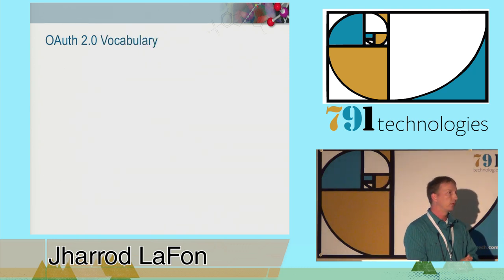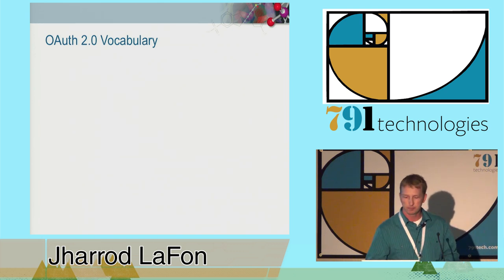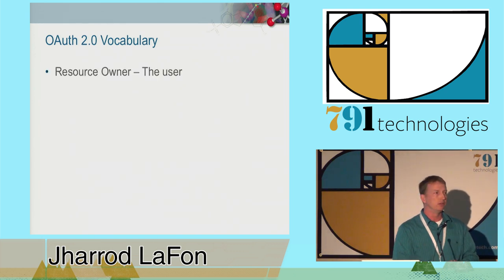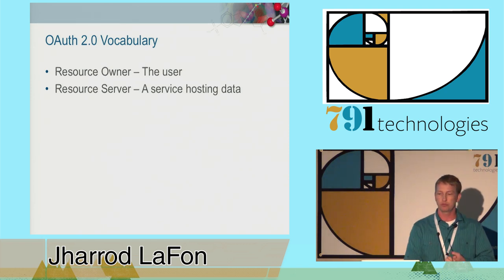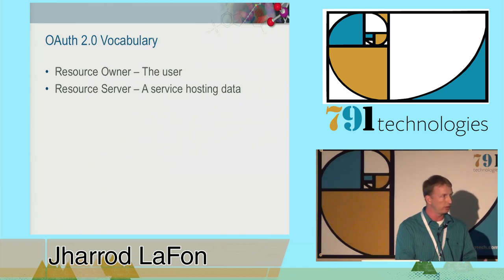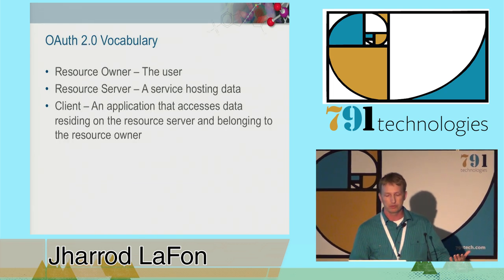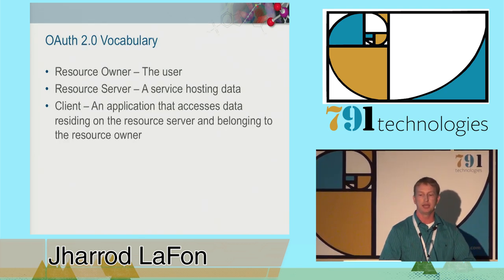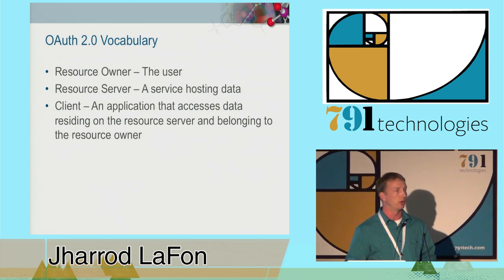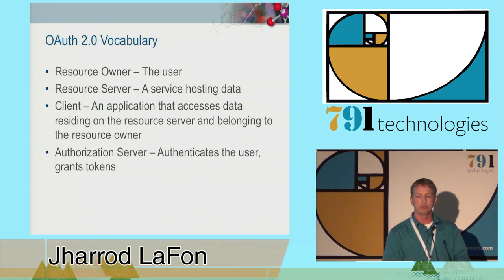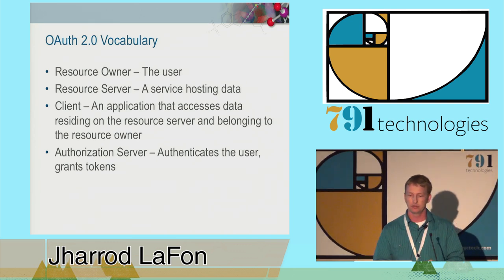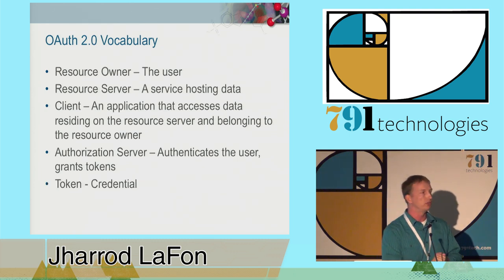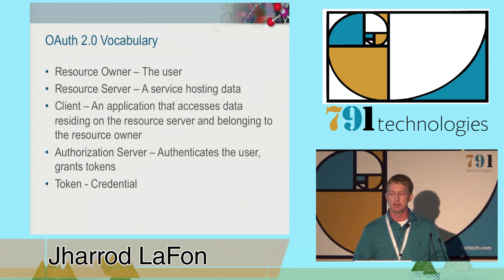OAuth 2 has its own vocabulary. First, we have the resource owner—this is what we would call a user, and this user owns data that is stored on the resource server. A resource server is a server that hosts the data and provides controlled access to it, and it provides that access to the client. The client is another application that accesses data residing on the resource server belonging to the resource owner, and can do this by working with the authorization server. It puts all of this together by taking the authenticated user and allowing that user to specify access to clients, and it enacts that access by granting tokens. Tokens are just credentials—you can think of them like a key with some metadata attached.